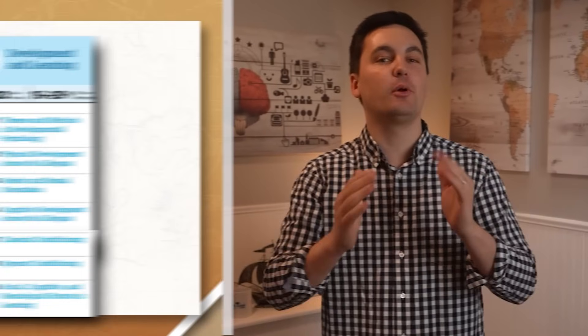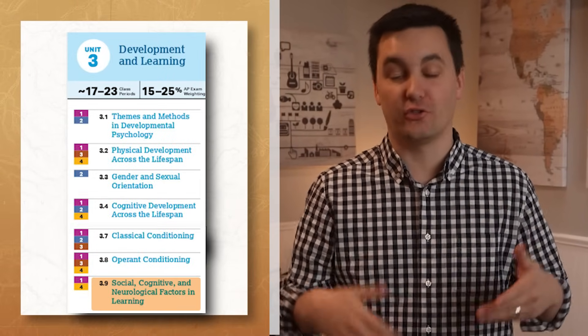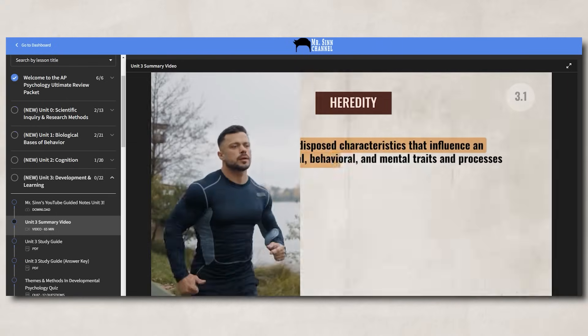Today we review social, cognitive, and neurological factors in learning as we wrap up Unit 3 of AP Psychology. This is the last video of Unit 3 — well, not exactly the last. We still have the Unit 3 Summary video, which covers every single concept in Unit 3 all in one video. But we need to review 3.9 first.